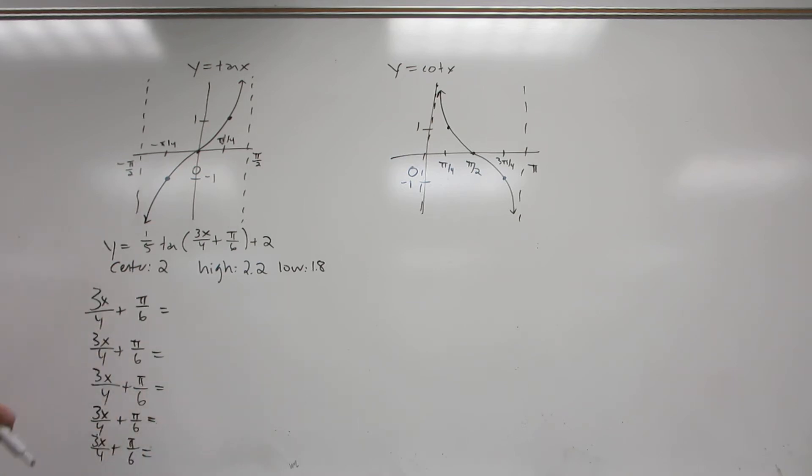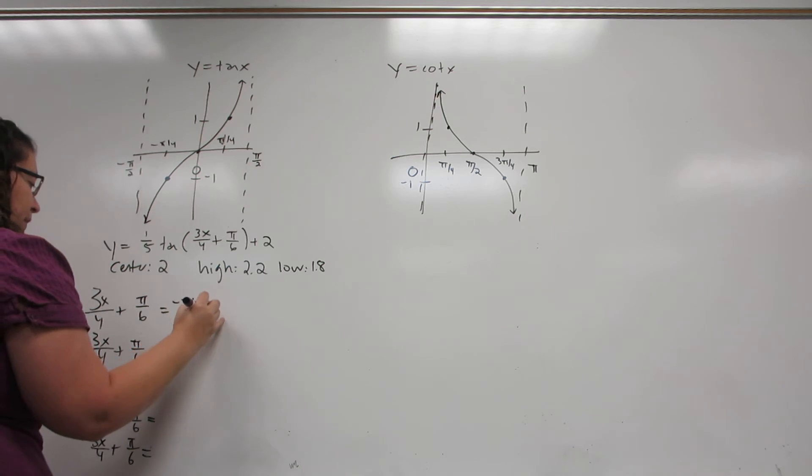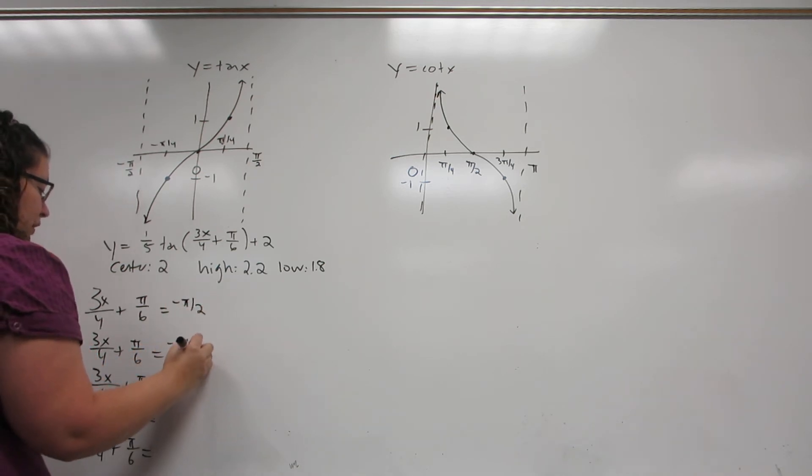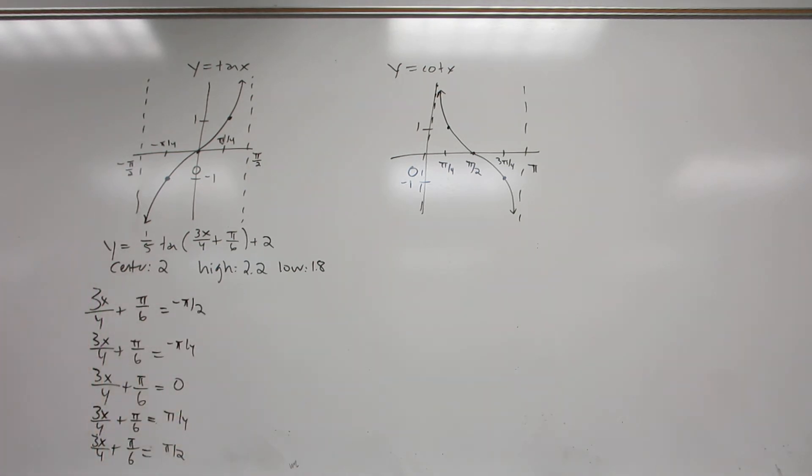But instead of the key points from the other four trigonometric functions, tangent and cotangent have their own unique set individually. So tangent is minus pi over two, minus pi over four, zero, pi over four, pi over two. In addition to them being different and not starting at zero, we also notice that they are much closer together than the key points of the other four trigonometric functions. Also, because it's over fours instead of over twos, they make it a little bit harder to solve for the new key points.